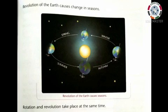See page number 95. Revolution of the Earth causes change in seasons. This picture shows revolution of the Earth causes seasons. The seasons shown are summer, autumn, winter, and spring.